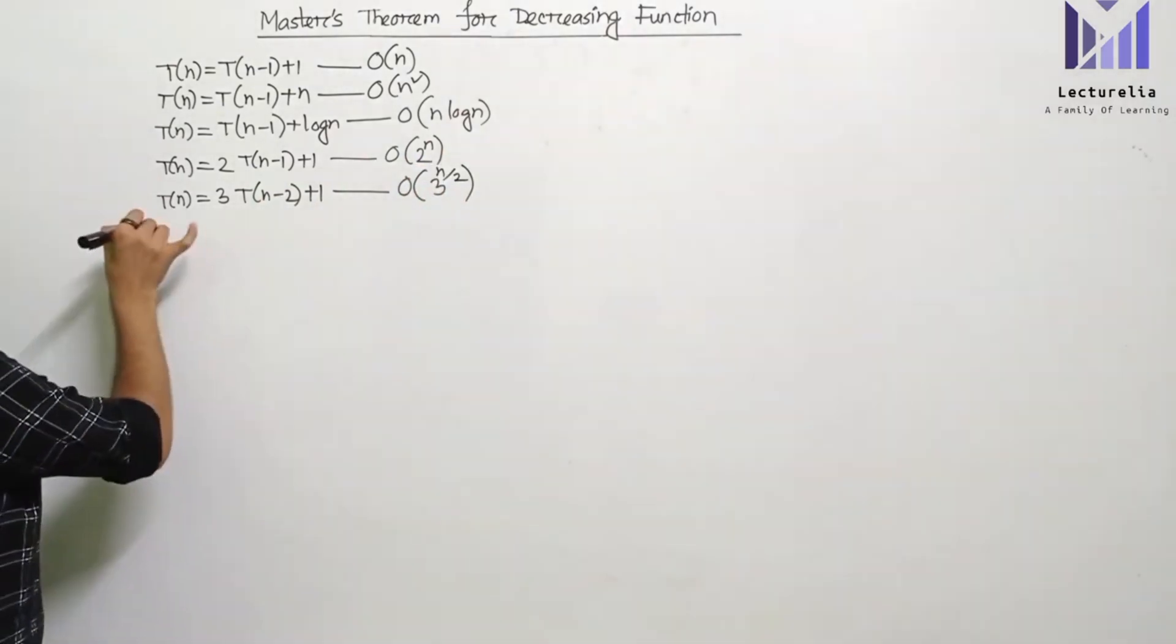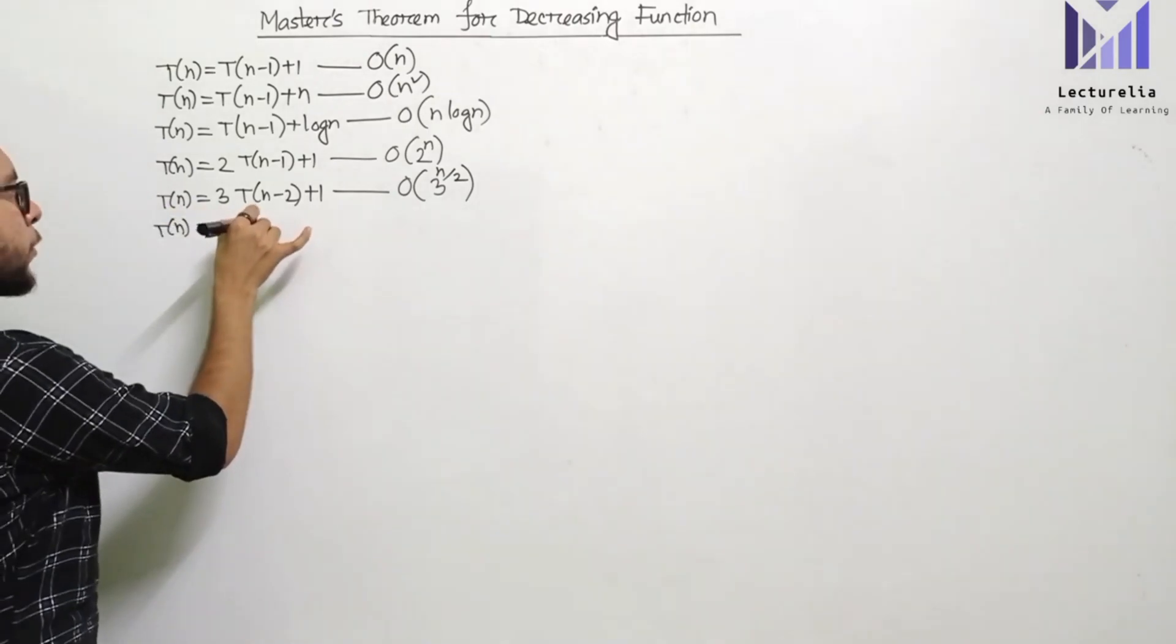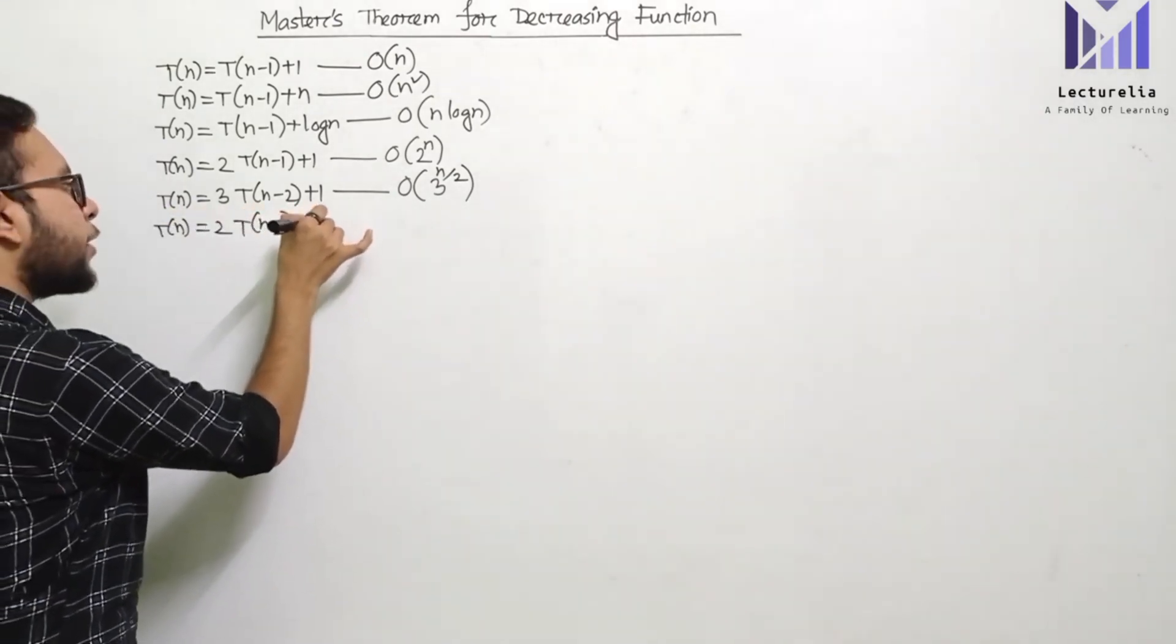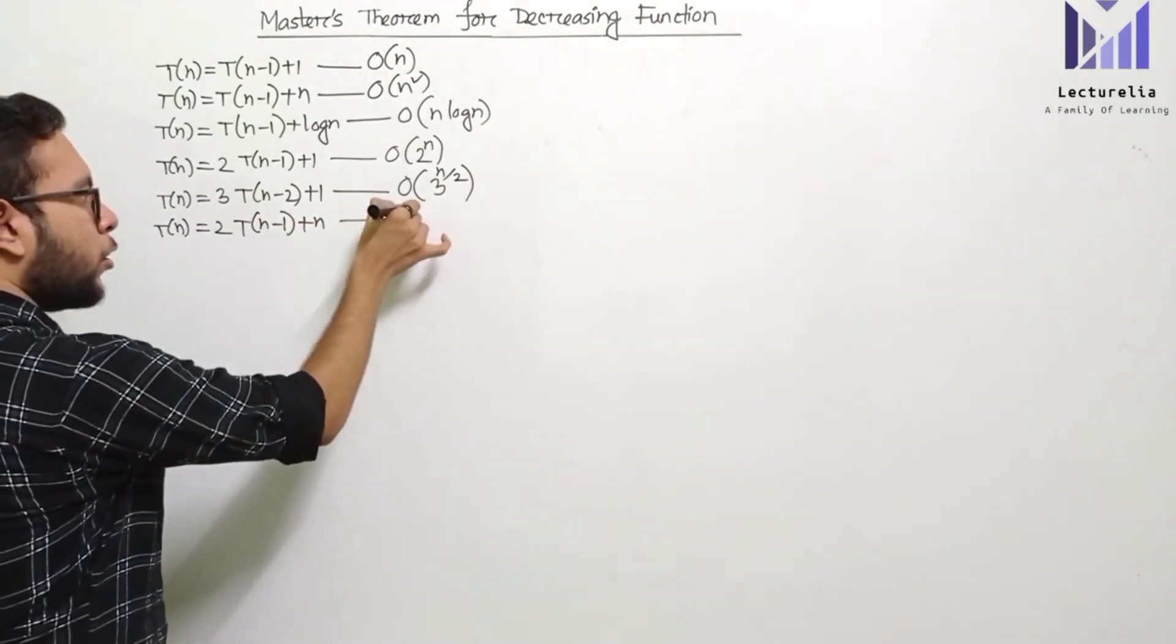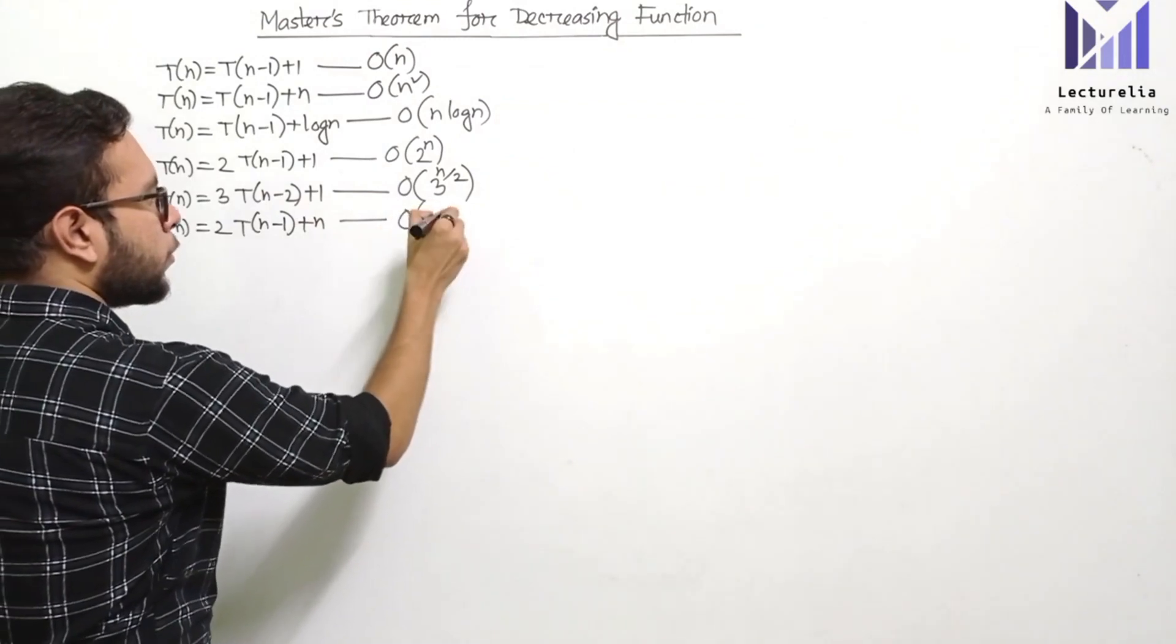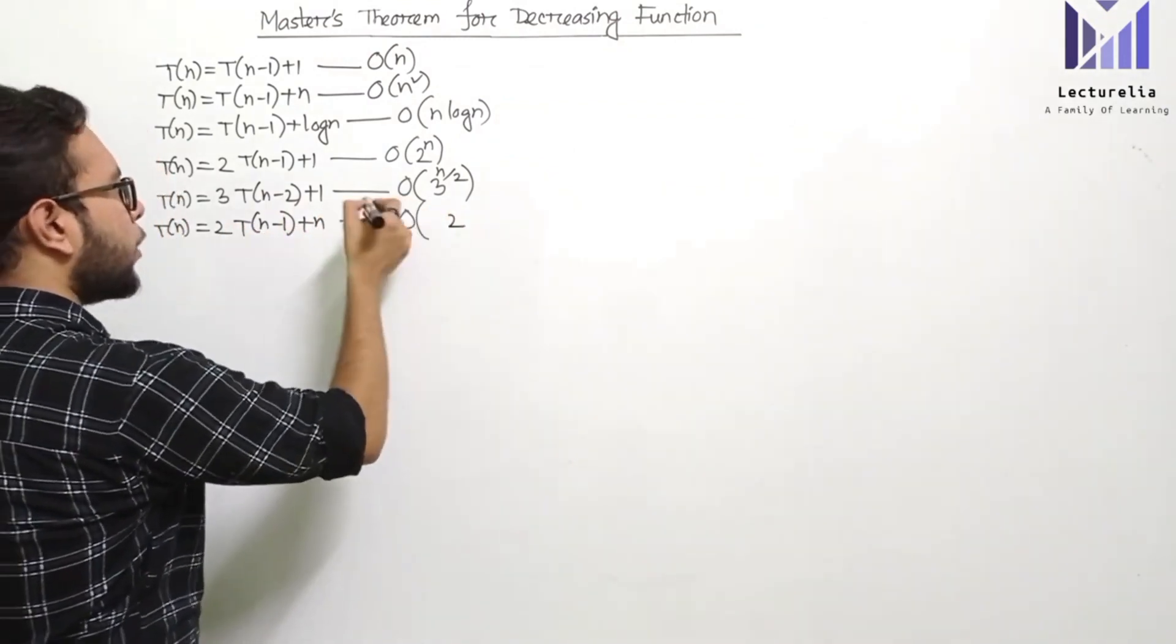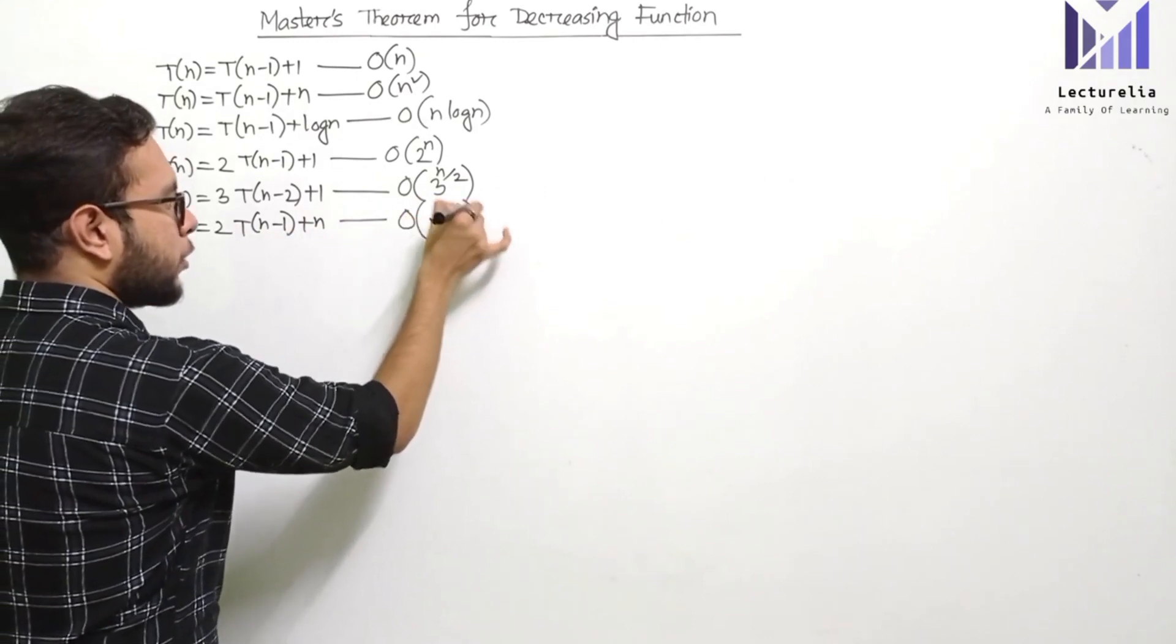Here we discussed the recurrence relation T(n) = 2T(n-1) + n, and we found the time complexity was order of 2 to the power n multiplied with n.